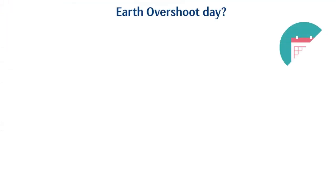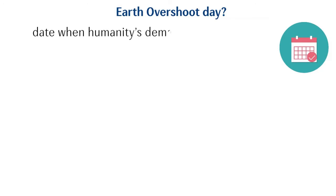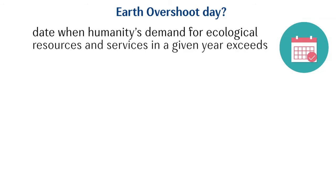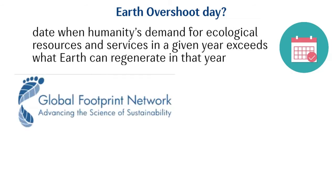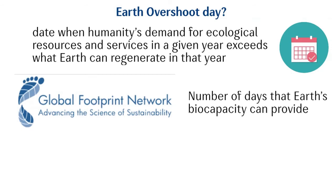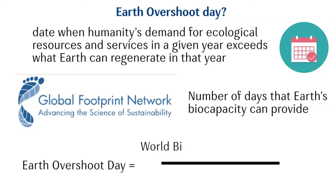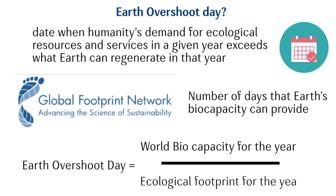Earth Overshoot Day marks the date when humanity's demand for ecological resources and services in a given year exceeds what Earth can regenerate in that year. To determine the date of Earth Overshoot Day, Global Footprint Network calculates the number of days that Earth's bio-capacity can provide for humanity's ecological footprint. To roughly visualize it, Earth Overshoot Day equals the ratio of world bio-capacity for that year upon ecological footprint for that year, multiplied by 365.